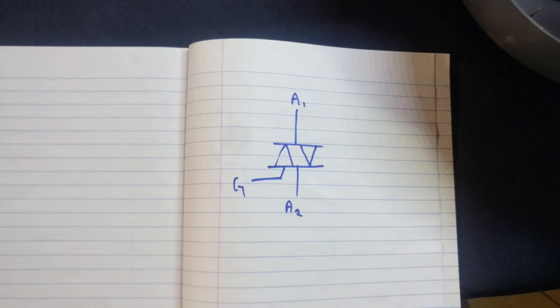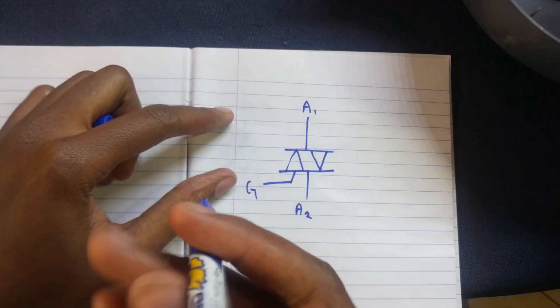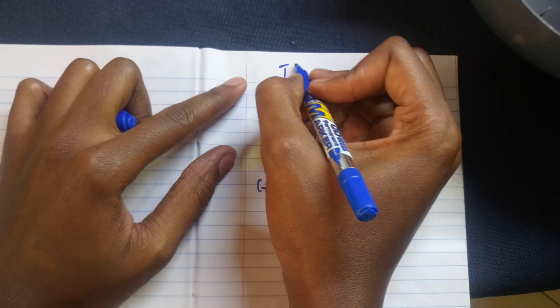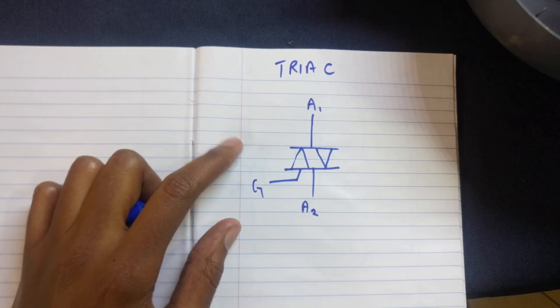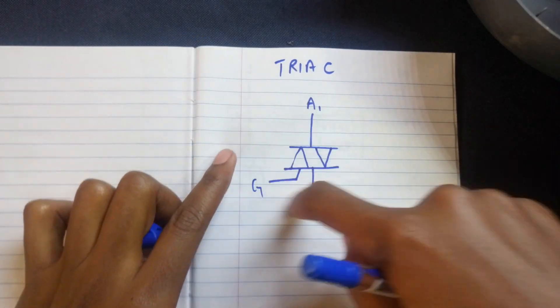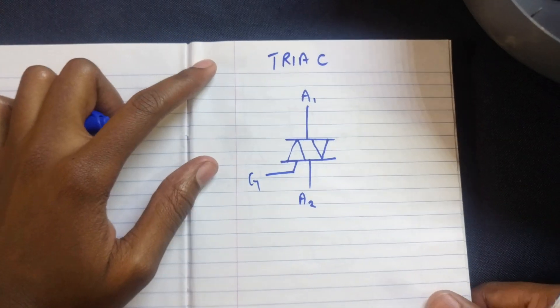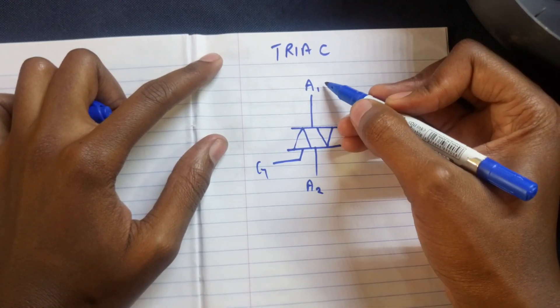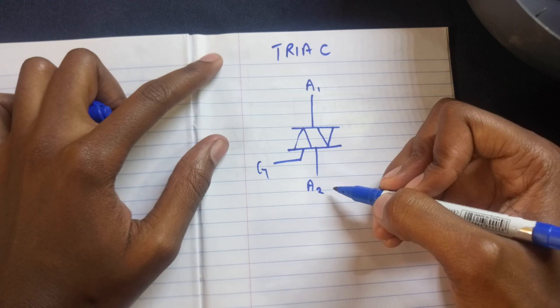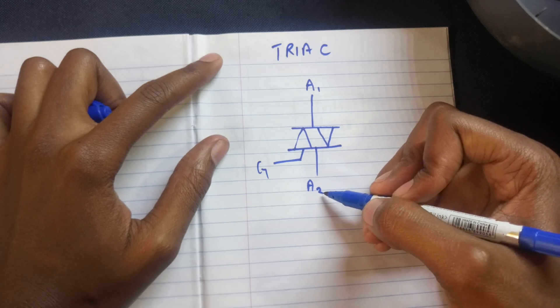A triac, also known as a triode for alternating current, is a three-pin electronic device that conducts electricity either way.